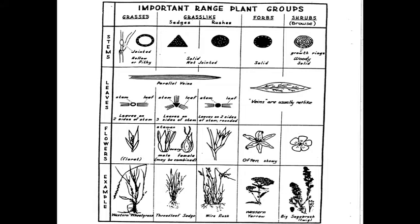Forbs have solid stems or often spongy type centers, a lot like those packing peanuts that you see in a crate. They have net venation in the leaves and the flowers are often showy. Something like western yarrow is a good example of a forb.